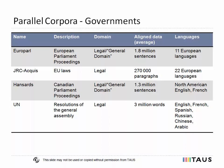Canadian parliament proceedings are available in two languages, American English and Canadian French, while United Nations assembly resolutions are regularly translated into English, French, Spanish, Russian, Chinese, and Arabic.